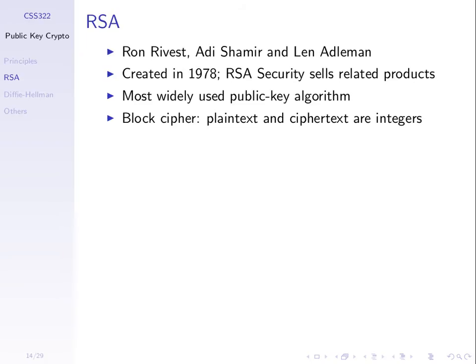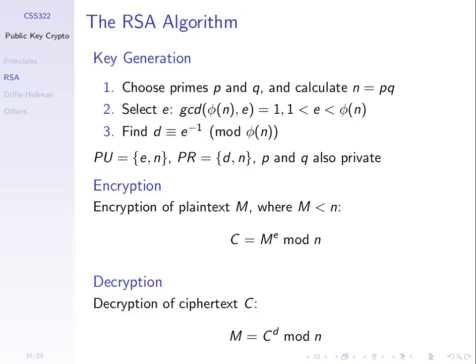RSA is considered the most widely used public key algorithm and is still considered secure. It is not commonly used for encrypting data directly — it's primarily used for authentication. We'll explain the difference after going through the algorithm. Every user generates their own key pair; you do it yourself because one of them is a private key. In our examples, the private key is the values d and n, and the public key is e and n.